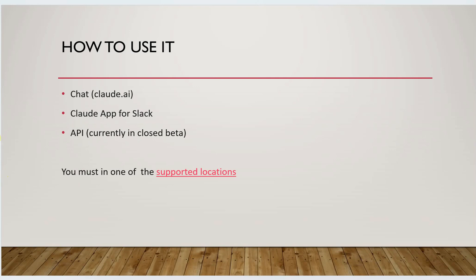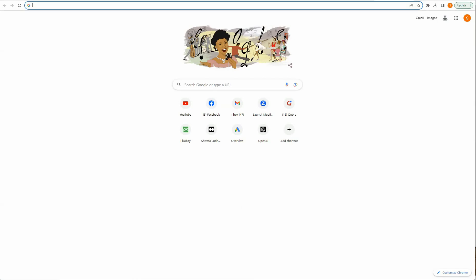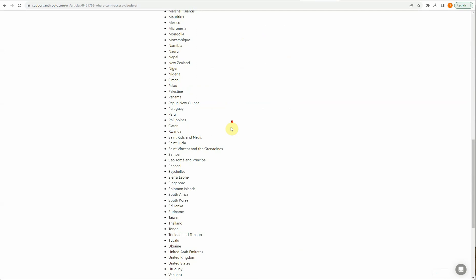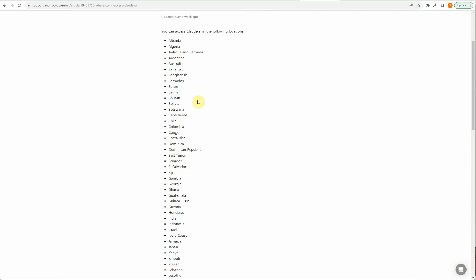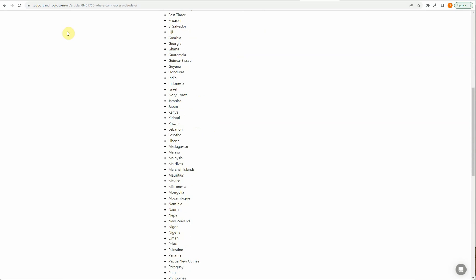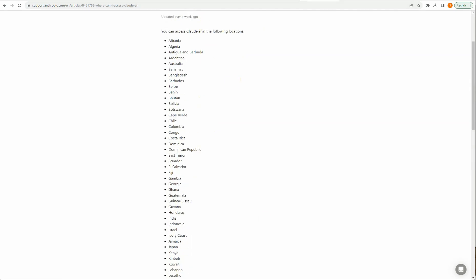So how can you use Claude? There are various ways. The easiest way to try it out is using the chat by going to claude.ai. It also has an app for Slack. For developers who want to experiment with it, there is an API available, though right now it is in closed beta. And as I mentioned, it was initially available in just a handful of countries but now it is supported in almost more than 90 different locations. You can go to support.anthropic.com and search for where you can access claude.ai.